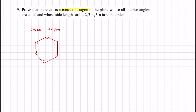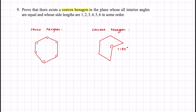An example of a concave hexagon — the opposite of a convex hexagon — looks something like this, because here we have an angle that is greater than 180 degrees. Both shapes have six sides, but only one is convex.